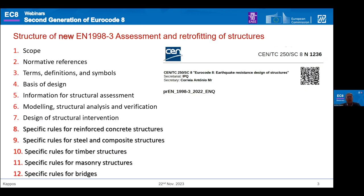Now, let us go to the new Eurocode. If you look at the list of contents, it looks similar and dissimilar: you start with the standard clauses — scope, normative references, terms, definitions, and symbols — then go to the main parts: basis of design, information for structural assessment, modeling and analysis, verifications, and design of structural intervention. In bold fonts you have the new clauses, which have evolved from the previous informative annexes but are now part of the formal code. This is a very, very important change.